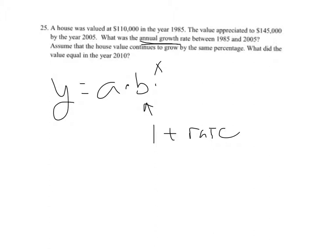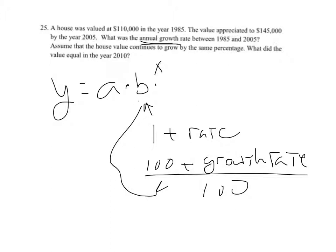Because this is growing annually, they aren't telling us there's any extra compounding going on. So the other way to think about that is that's 100% plus the growth rate, divided by 100. So if we can find that B number, we can work it backwards to find the growth rate.